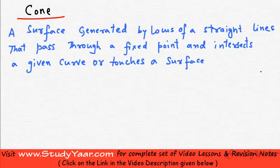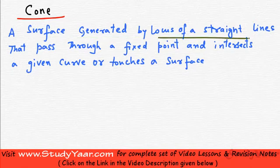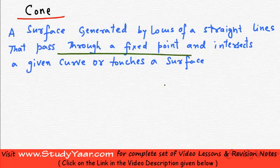Let's learn about cone. What is a cone? A cone is a surface which is generated by the locus of straight lines that pass through a fixed point and intersect a given curve or touch a surface.